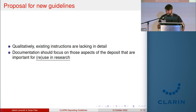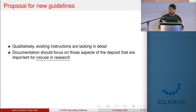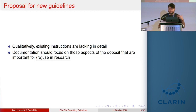Qualitatively, the existing instructions are generally lacking in detail and are uninformative from the perspective of users unfamiliar with CLARIN. In the case of annotation, even the most detailed reviewed instructions simply prompt the depositor to specify whether a corpus is raw or annotated, without instructing them to provide more fine-grained information about the annotation process. Even for free text description, only one repository reminds depositors to describe basic things like the publication period of the text, and no guidelines mention providing an overview of characteristics specific to the research use.